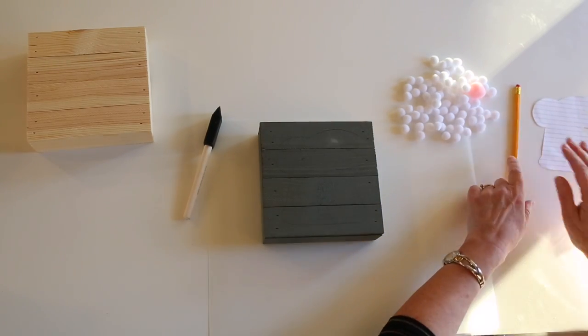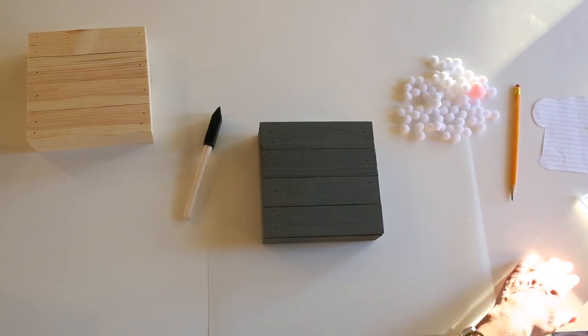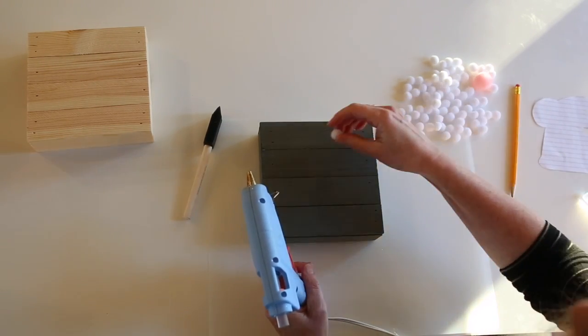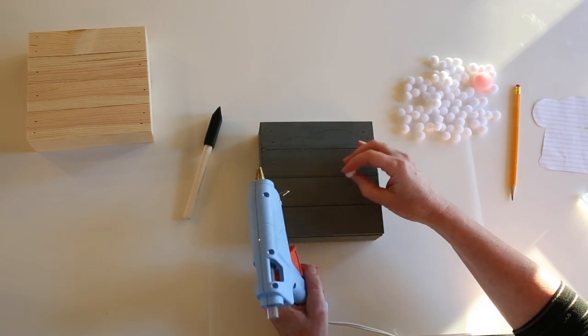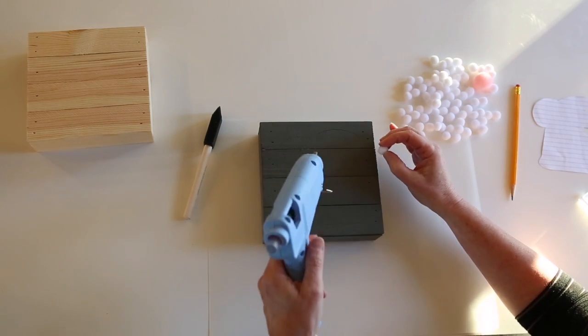There we go. All right, now I've got my glue gun. And what I'm going to do is I'm going to take these pom poms and I'm going to do the outline first to make sure that I have room for the edges and they go on straight.